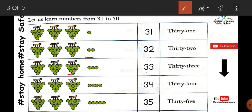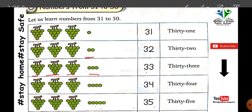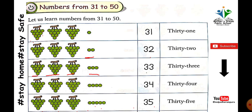Next, three groups of grapes and three extra — that's thirty-three. Three groups of grapes and four extra — thirty-four. Next, three groups of grapes. How many extras? One, two, three, four, five. Thirty-five. T-H-I-R-T-Y. Thirty. F-I-V-E. Five. Thirty-five.